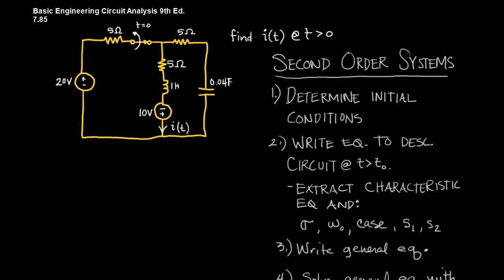When you're solving these circuits, this is the algorithm I use. First, I'll determine the initial conditions. The initial conditions are: the current through the inductor at t equals zero, the voltage across the capacitor at t equals zero, the variable that you're solving for — in this case i(t) at t equals zero plus — and the terminal value of that parameter, so i at infinity.